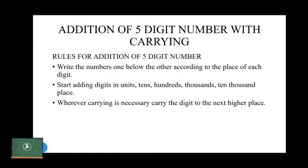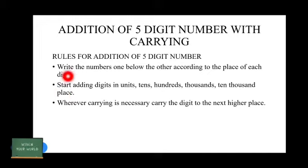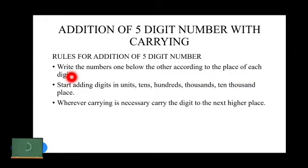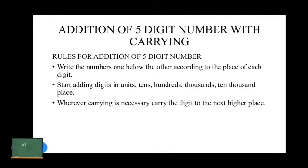So far you have learnt about addition of 5-digit numbers without carrying. Now you will learn about addition of 5-digit numbers with carrying. The rules are: write the numbers one below the other according to place value — units, tens, hundreds, thousands, and ten-thousands place. Wherever carrying is necessary, carry the digit to the next higher place. Now let's solve problems based on addition with carrying.